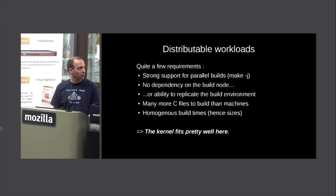Just to give you an example: my laptop builds the whole allmodconfig kernel in 43 minutes, and on this farm when it works, in only 14 minutes. I managed to build the latest 3.10.103 kernel for various architectures, and it saved me a lot of time. The last two versions of the kernel I built for our load balancer were built on this farm as well. When it works, it works fine.